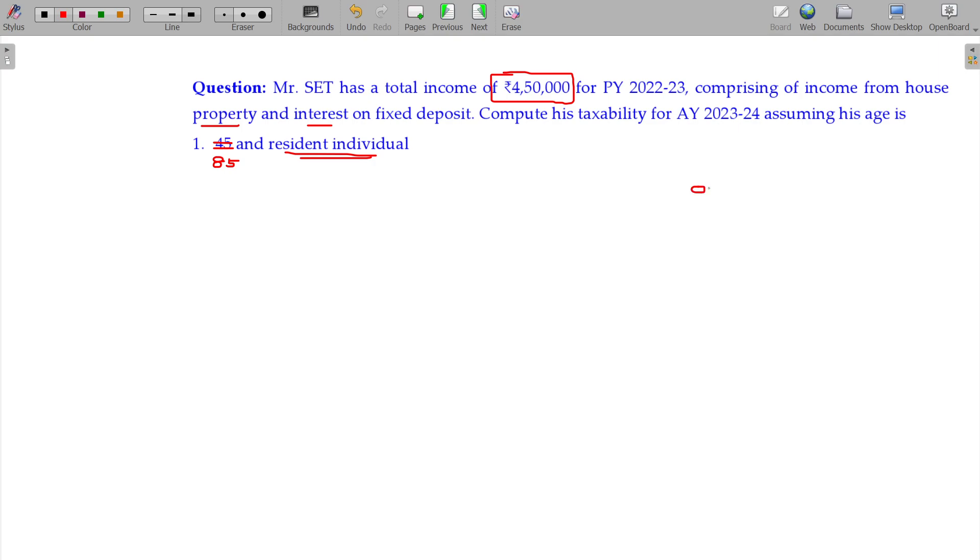If the income being 0 to 2.5 lakhs is applicable in general category, 2.5 to 5 lakhs is 5% in general category, 5 to 10 lakhs is 20% in general category, 10 lakhs and above is 30% in general category. In case of resident super senior citizen, okay.